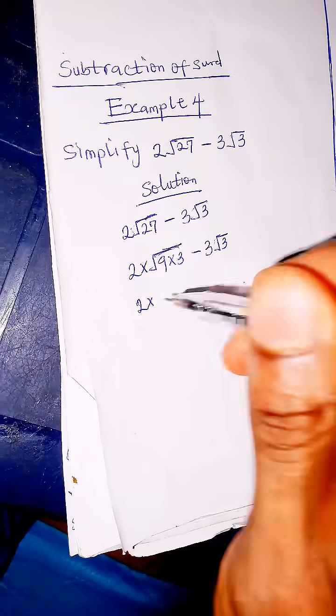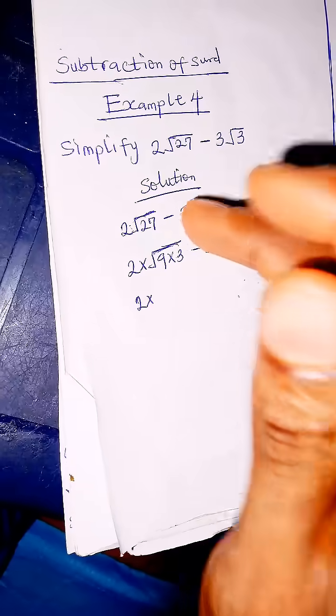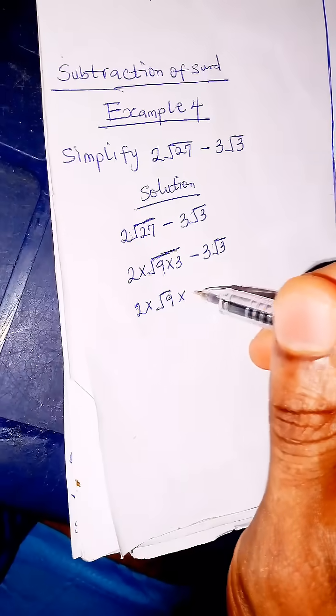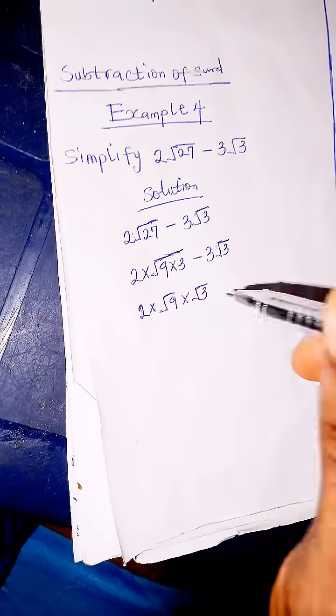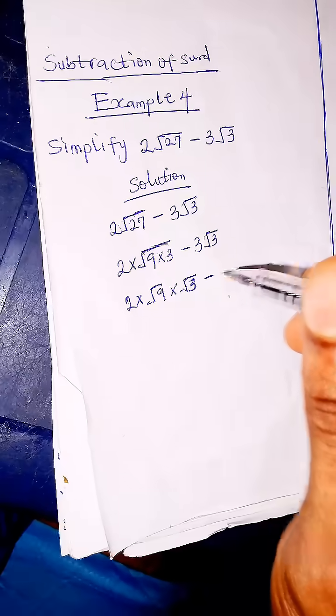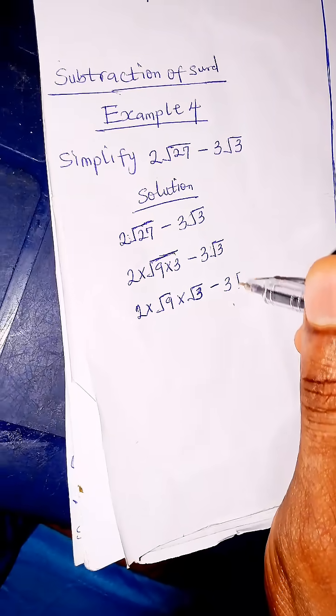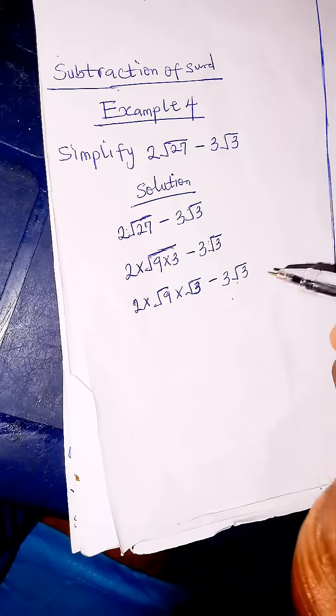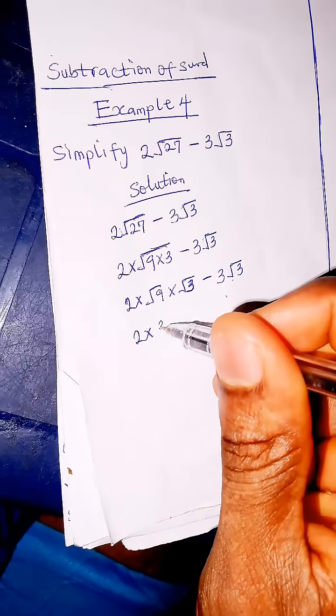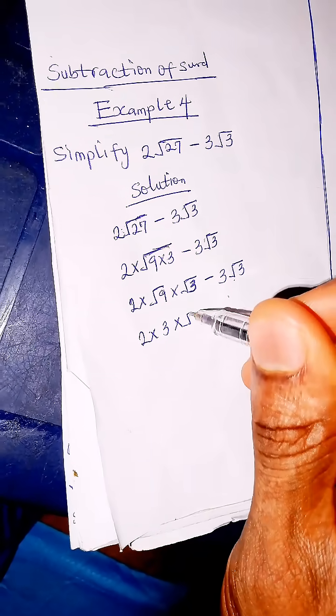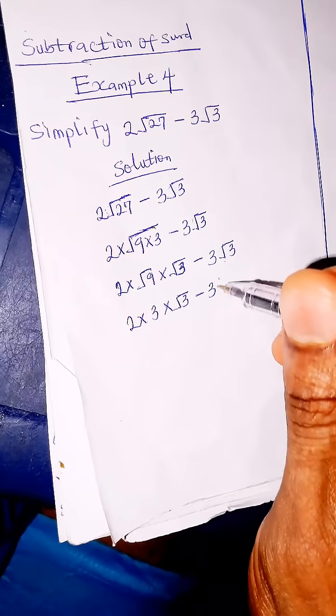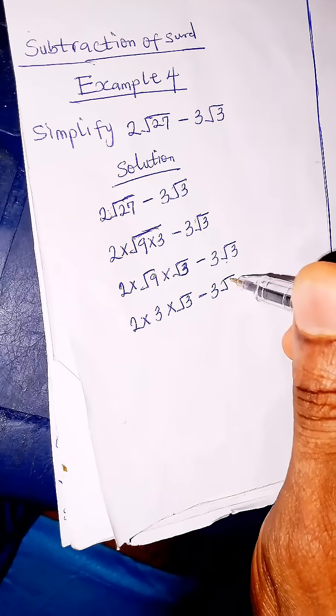We have 2 times - we are going to split this - root 9 times root 3, minus 3 root 3. 2 times root 9 is 3, times root 3.